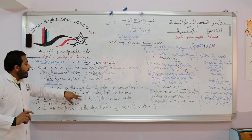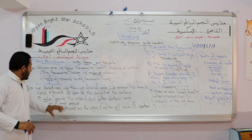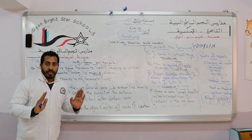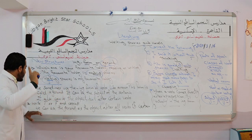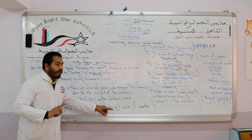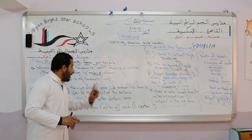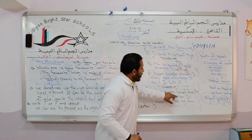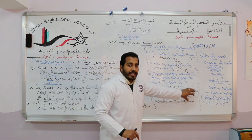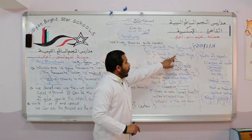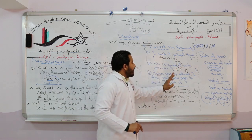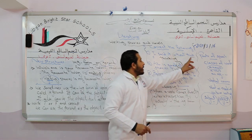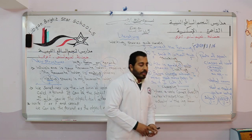The gerund can be the subject of the sentence. It can also be the object after certain verbs — we can't say after all verbs, we must say after certain verbs. When a verb comes directly after a preposition, it's in the -ING form. Without, at, before — these words are prepositions, so the verb must be in the -ING form, or gerund.